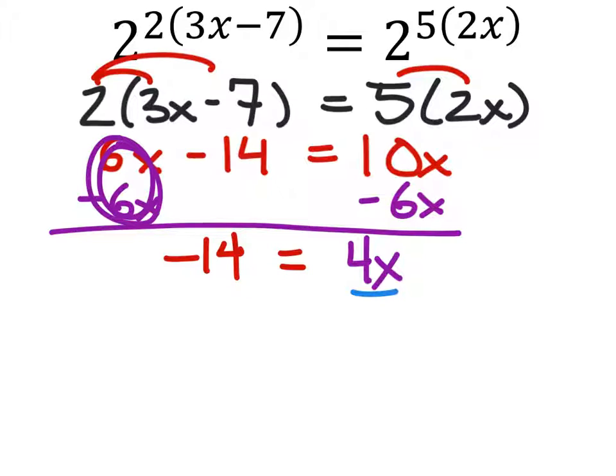Finally, to solve this equation, we would divide both sides by 4, which gives us the value of x as negative 7 halves, or negative 3.5.